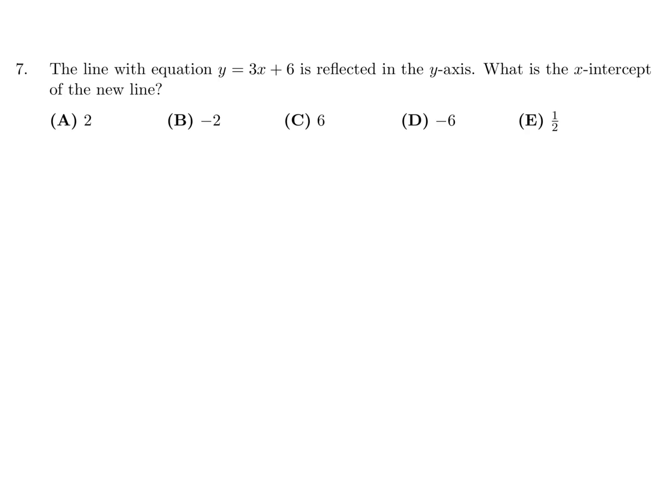The line with equation y equals 3x plus 6 is reflected in the y-axis. What is the x-intercept of the new line? Let's draw a graph. So here we have x and we have y. So y is equal to 3x plus 6. When x is 0, y would be 6. So let's say right there. And when x is minus 2, y would be 0. So that means this is the line right here.